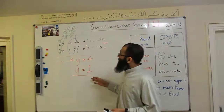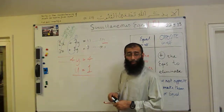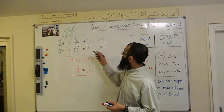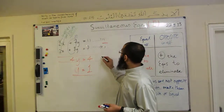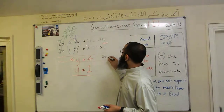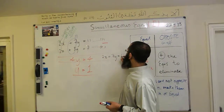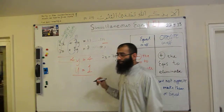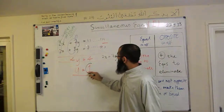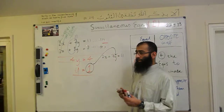Now we need to find the value of x. We need to substitute y back into one of the equations. Let's choose equation number 1. So we have 2x add 7y equals 11. We get the value of y is 1 and put it into the y.